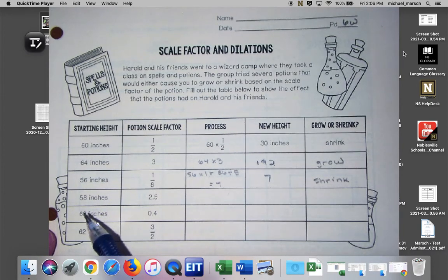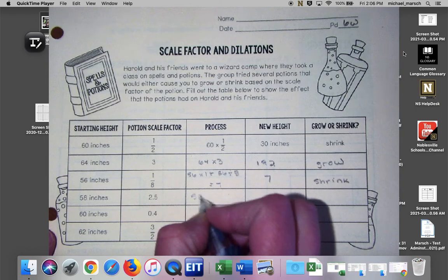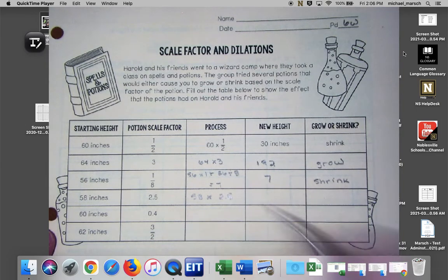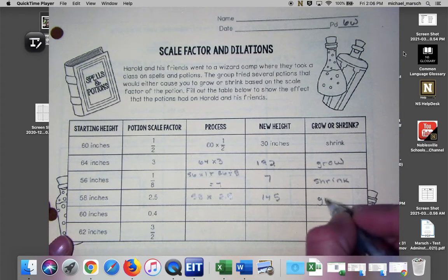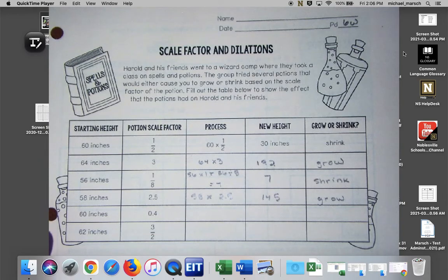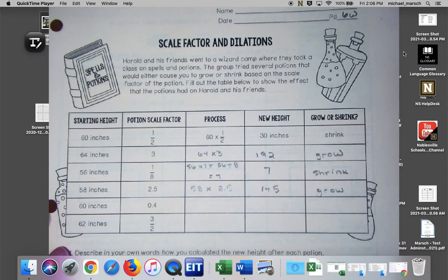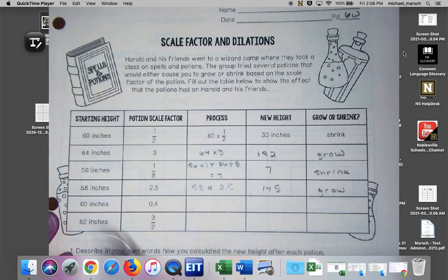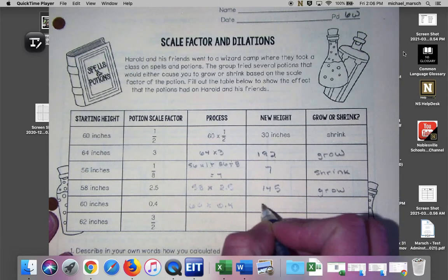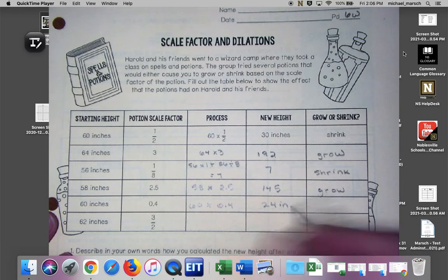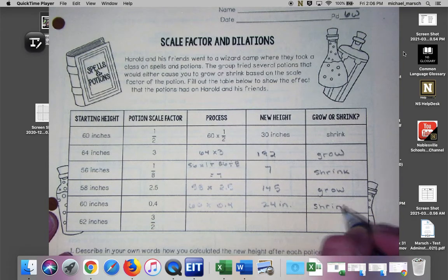Okay this person's 58 inches so we're going to do 58 times 2.5 and you should get 145. So they were grown. Then 60 inches times 0.4, they're going to now be 24 inches. That was a shrink.